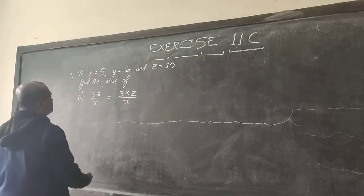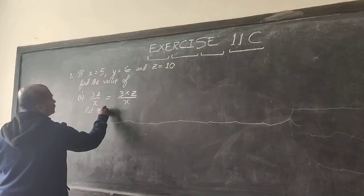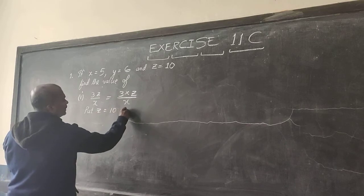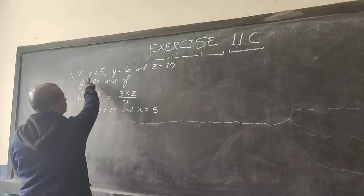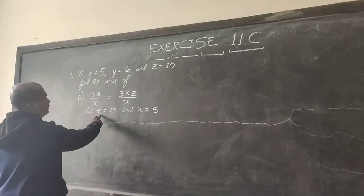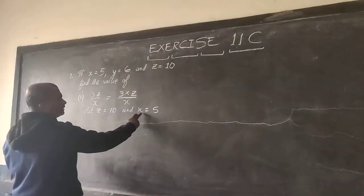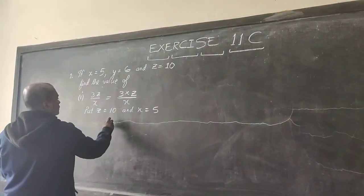Now all we have to do is put Z equals 10 and X equals 5, right? From here, the question. The question also says Z is 10, so we will put Z equals 10, X equals 5. So let's see what we get.